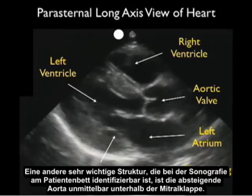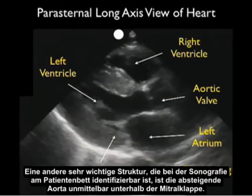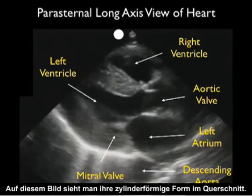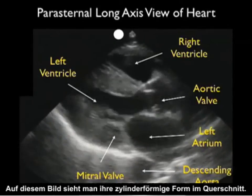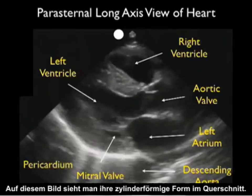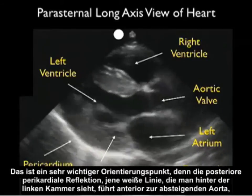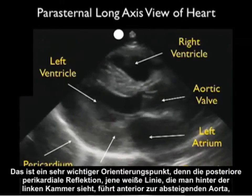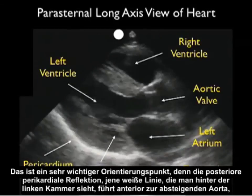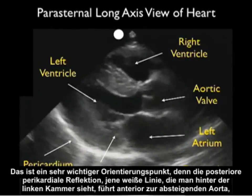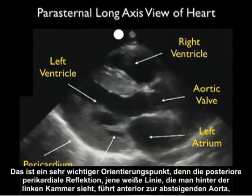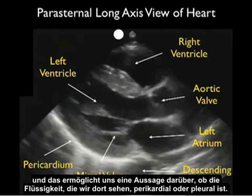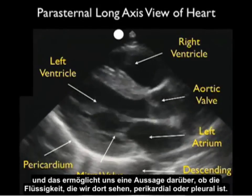Another very important structure to identify on bedside sonography is the descending aorta, which is a cylinder cut in cross section right below the mitral valve, as seen in this image. This is a very important landmark because the posterior pericardial reflection — that white line seen posterior to the left ventricle — comes off anterior to the descending aorta. This allows us to tell if fluid seen there may be pericardial or pleural.